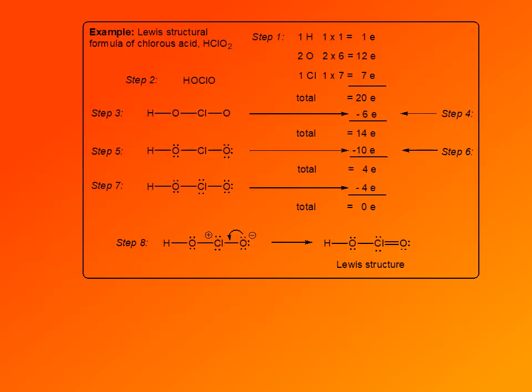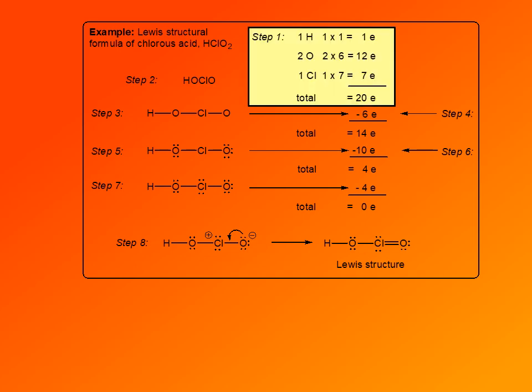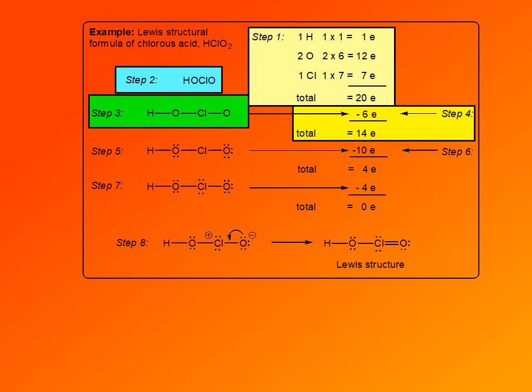Here is an example: drawing the Lewis structure of chlorous acid, HClO2. Step 1 — calculate valence electrons: 1 hydrogen × 1 = 1; 2 oxygens × 6 = 12; 1 chlorine × 7 = 7. Total: 20 valence electrons. Step 2 — central atom is chlorine, since there is only one chlorine. Peripheral atoms are the two oxygens, attached to chlorine, and hydrogen is attached to one of the oxygens. Step 3 — connect all atoms with single bonds: that's 3 single bonds. Step 4 — 3 bonds × 2 electrons = 6 electrons used, leaving 14 valence electrons.